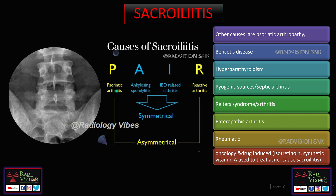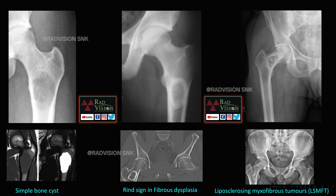PAIR: psoriatic arthritis and reactive arthritis show asymmetrical involvement, whereas ankylosing spondylitis and IBD-related arthritis show symmetrical involvement. Other causes of sacroiliitis to remember include psoriatic arthropathy, Behçet's disease, hyperparathyroidism, pyogenic/septic arthritis, Reiter's syndrome, enteropathic arthritis, rheumatic causes, oncology, and even drug-induced — isotretinoin, a synthetic vitamin A derivative used to treat acne, which can also rarely cause sacroiliitis.